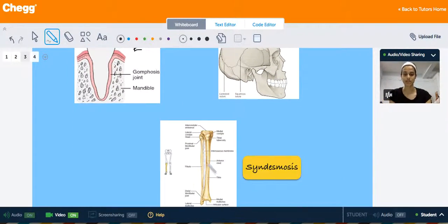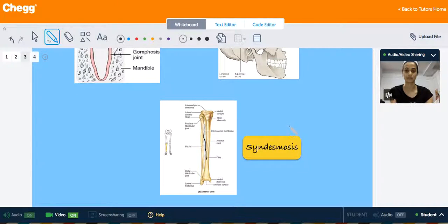Sutures are the joints that connect the bones of your skull. And over here you have a syndesmosis, which is the third type of fibrous immovable joint, which is formed by this interosseous membrane. In this case, it's between the tibia and fibula of the lower limb.